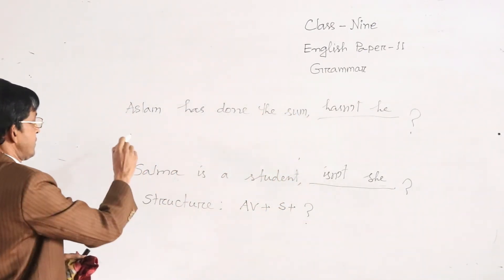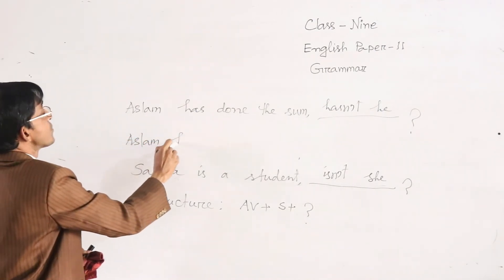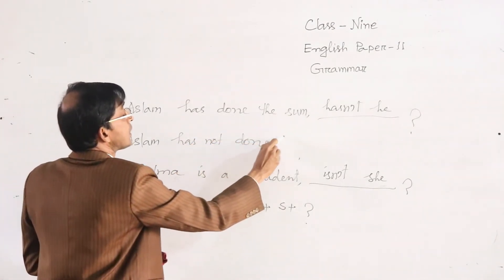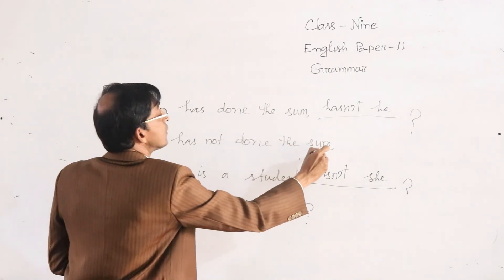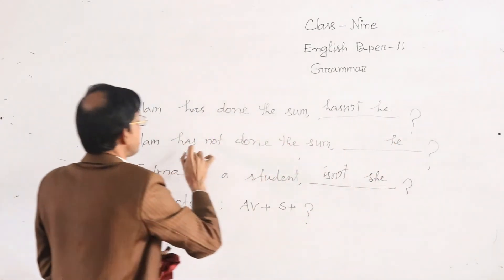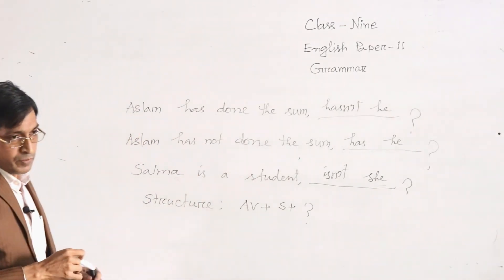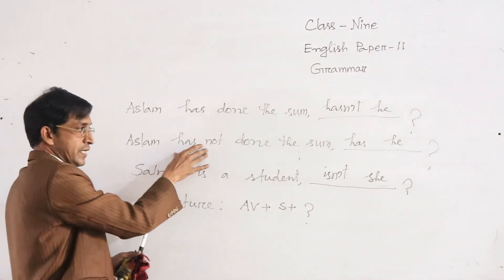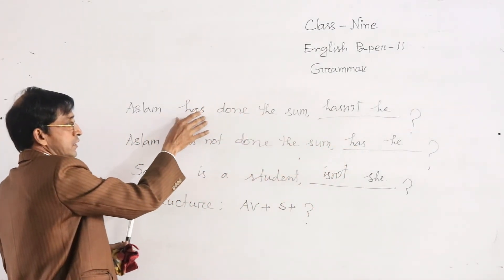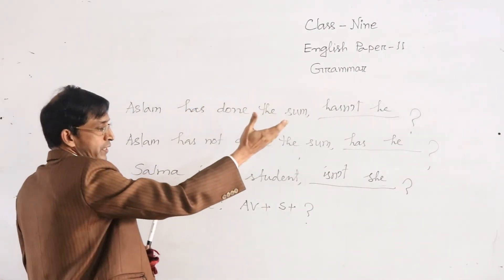And otherwise, Aslam has not done the sum. Aslam is he, auxiliary has. We will not use not, because if the statement is negative, tag question will be affirmative. If the statement is affirmative, tag question will be negative.